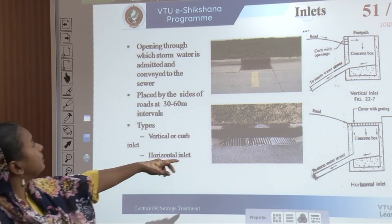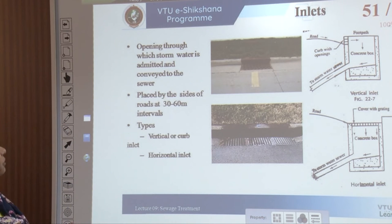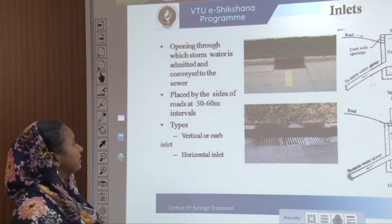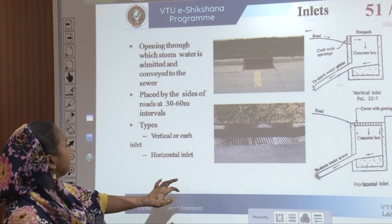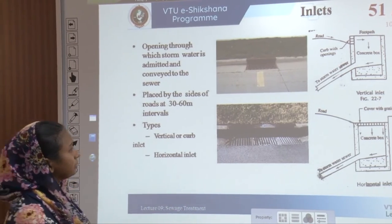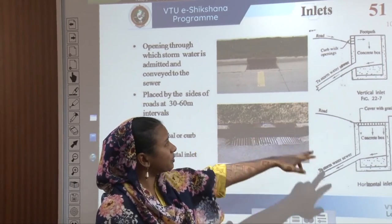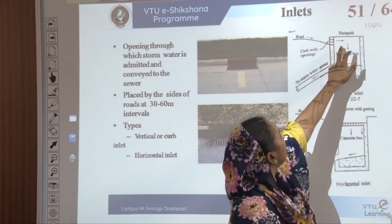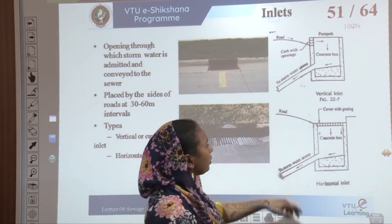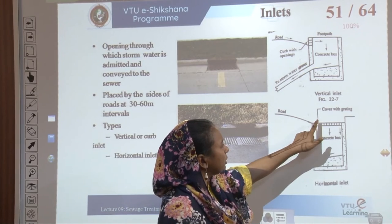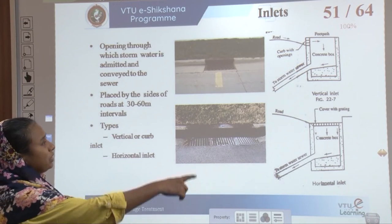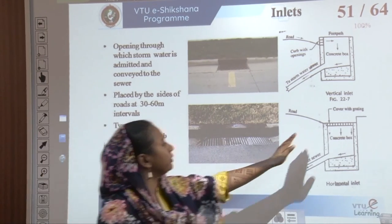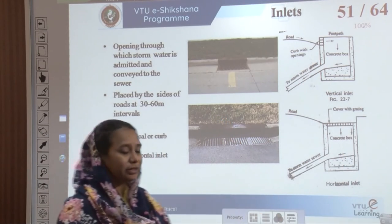Inlets are where all storm waters actually enter into sewers. They are placed by the sides of roads at 30 to 60 meter intervals. There are two types: vertical or curb inlets and horizontal inlets. In a vertical inlet, a concrete box receives water — water flows from road grates into the concrete box and into the storm water sewer. The type of inlet used depends on how water is allowed to enter the gradient.